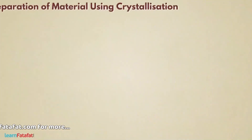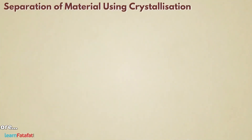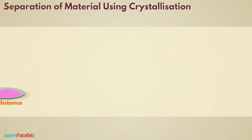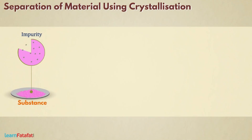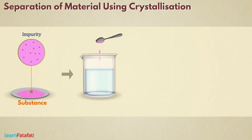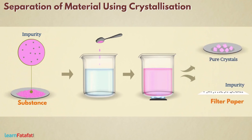Separation of material using crystallization. Many times we obtain a substance in impure form, that is, it contains impurities of other unwanted substances. If the substance has the ability to dissolve in water, then we use crystallization for separating it from the impurity.